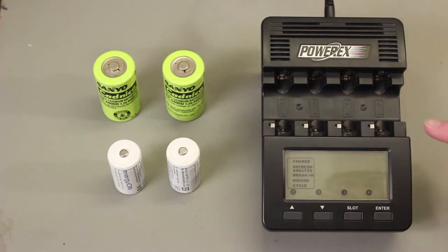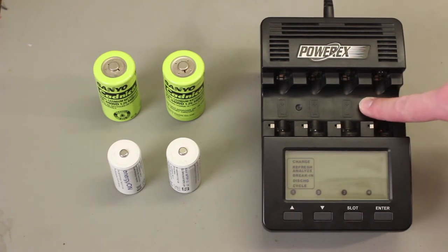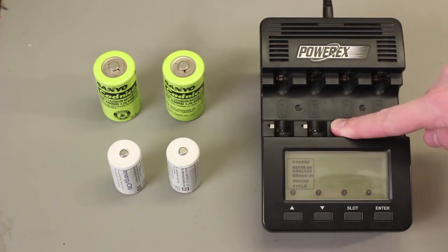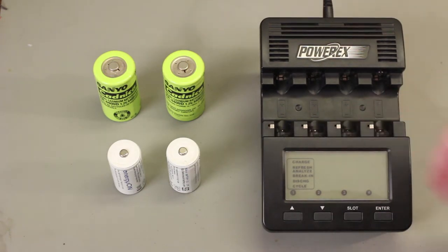In the last video, I explained the basics of using this Maha Energy PowerWorks MHC9000 battery analyzer. This is a great tool for working with nickel-cadmium and nickel metal hydride rechargeable cells.